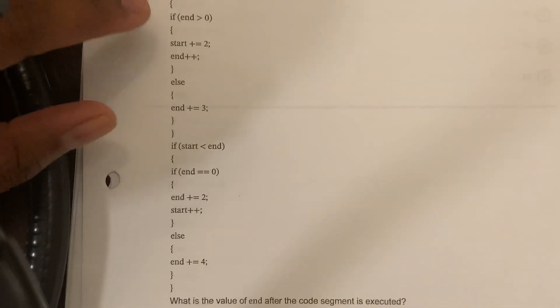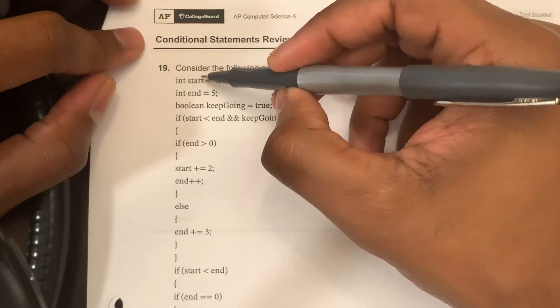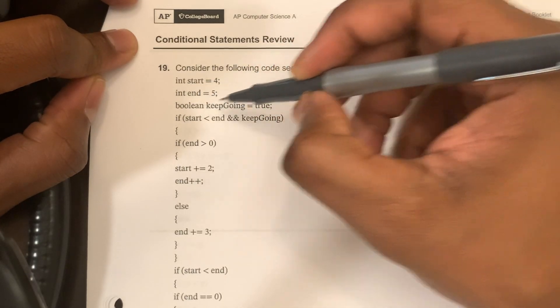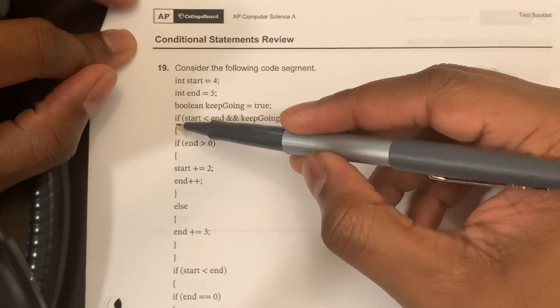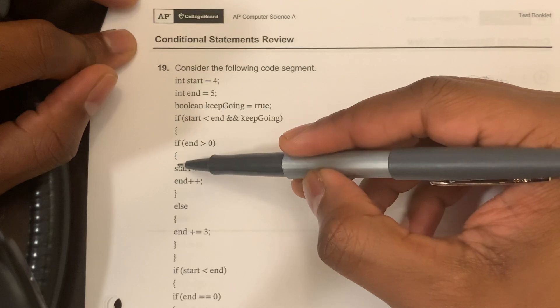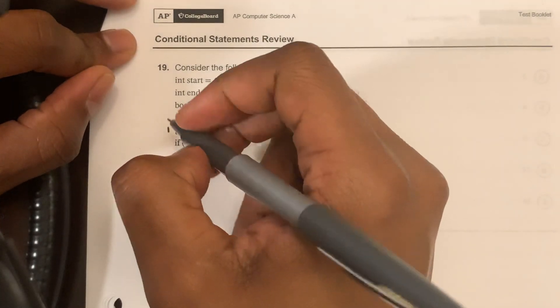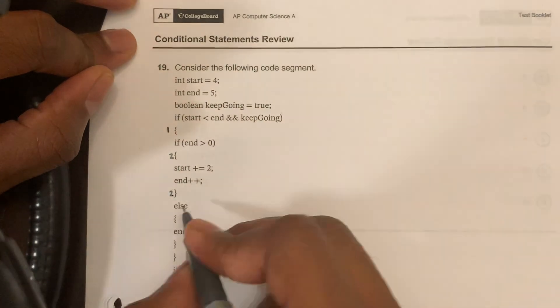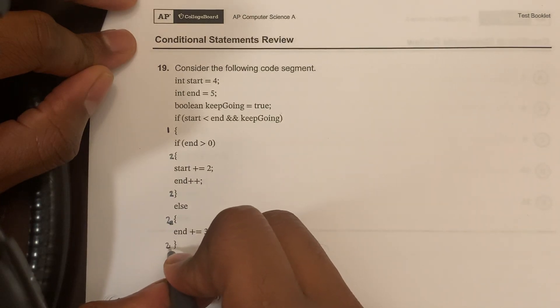For number 19 — the options are on a second page. We have: int start equals 4, int end equals 5, boolean keepGoing equals true. There's an if statement containing its own if statement. The first if statement starts here; the second if statement starts and ends inside it. The inner else statement ends, and then the outer if statement closes.